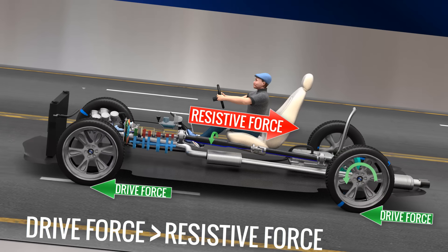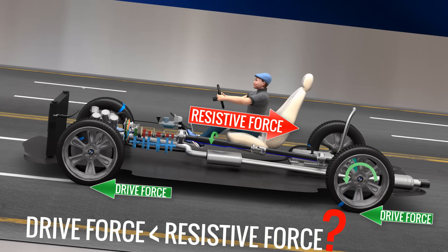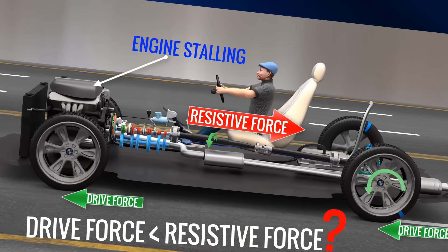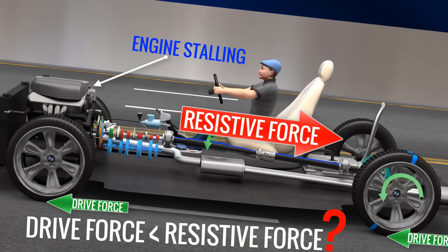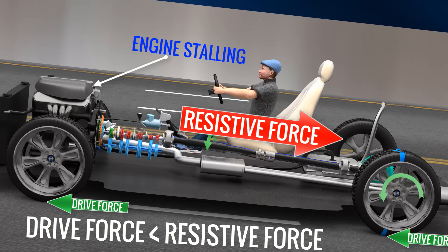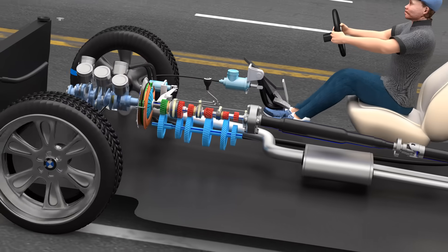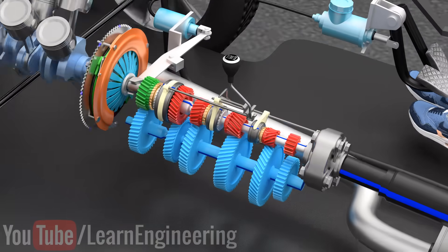However, what happens if the resistance is greater than the drive force at the wheels? This will cease the motion of the engine and the engine will stall. Fortunately, in a car, there is a mechanism to overcome this imbalance between the forces. The transmission.